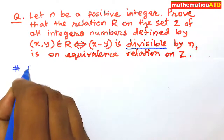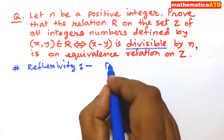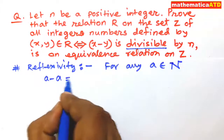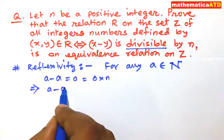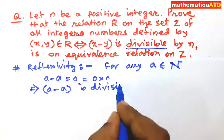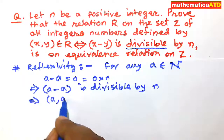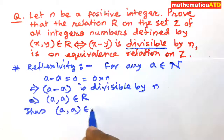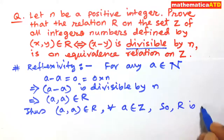We observe the properties of relation R. First: reflexivity. For any a belonging to Z, a minus a is equal to zero, and zero can be written as 0 times n, so it implies that a minus a is divisible by n. So the ordered pair (a, a) belongs to R for all a belonging to set Z. Thus R is reflexive.